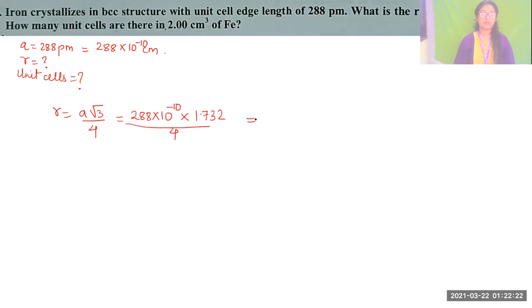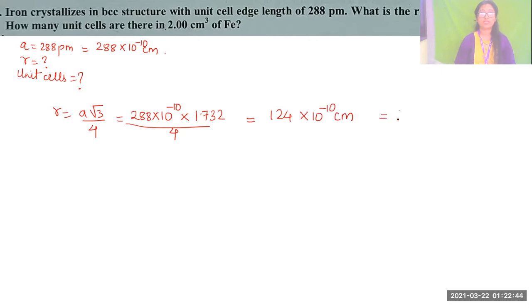Calculating gives r = 124 × 10⁻¹⁰ cm. Converting to picometers: 124.56 pm, which we can write as approximately 124.6 picometers.